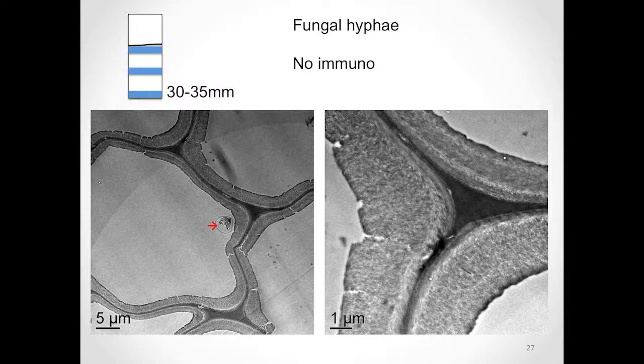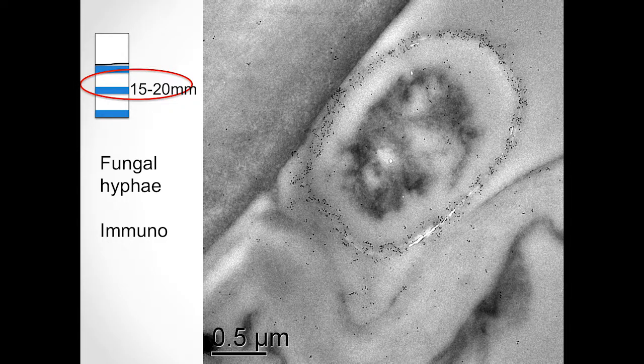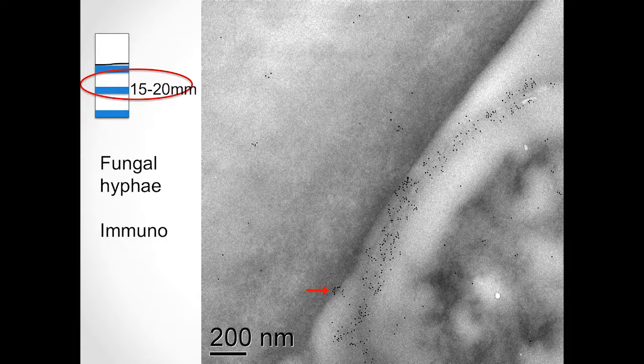For this reason, I focused a little bit more on sampling and imaging from the mid-stage decay, from the 15 to 20 millimeter area. If you look at the plant cell wall here, it looks a bit more intact. Now in this image, we are using our immunolabel and you can see the hyphae cross-section here, and you can see the nicely decorated perimeter with our immunolabel. Taking a closer look, you can see clusters of our immunolabel in fact inside what appears to be the S2 layer of the plant cell wall. So again, these are preliminary images, but a neat finding.